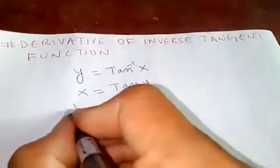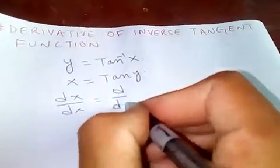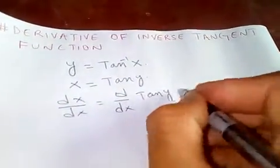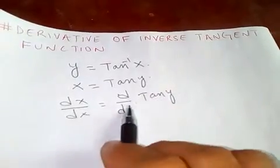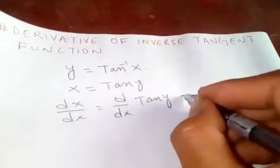We differentiate with respect to x, so dx over dx is equal to d by dx of tangent of y. This is tan y but we differentiate with respect to x, so we cannot differentiate it directly.